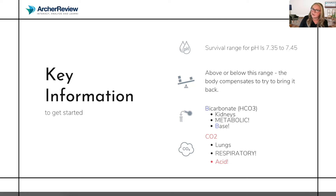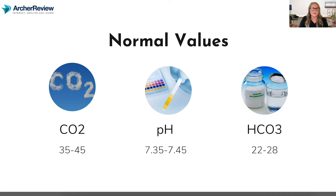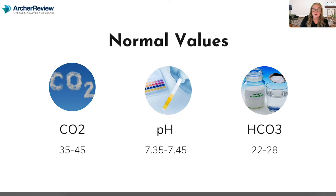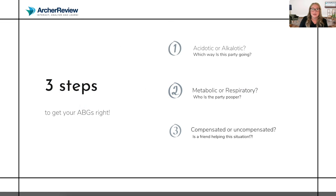Too much CO2 and you become acidotic; not enough of it and you become alkalotic. So you've got to know your normal values for the pH, CO2, and bicarb — you'll see bicarb abbreviated as HCO3. A normal CO2 is 35 to 45. pH — that survival range — is 7.35 to 7.45. And that bicarb is 22 to 28. Now the three steps you'll need to be taking to get that ABG interpretation right every single time: step one, is it acidotic or alkalotic? I like to paraphrase this as which way is this party going?